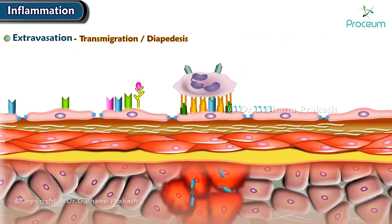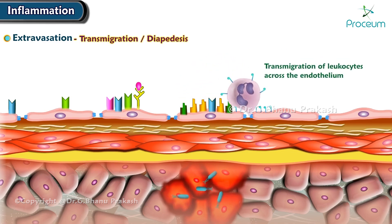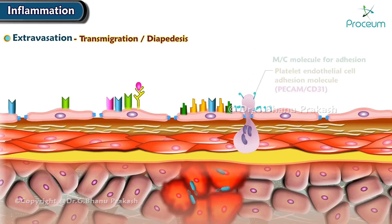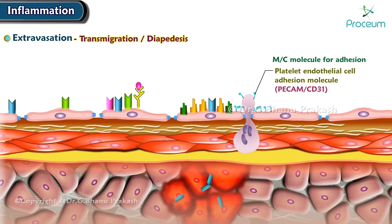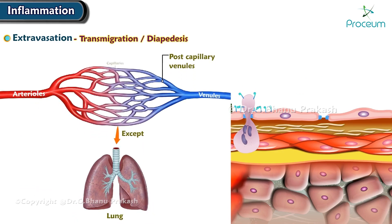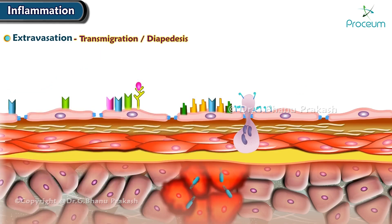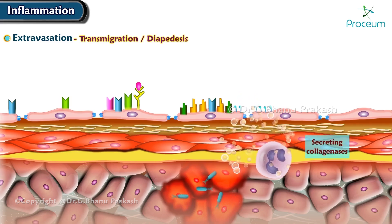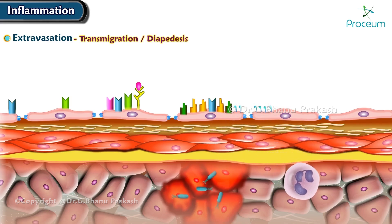Now let's move on to transmigration, or diapedesis. This is characterized by the transmigration of leukocytes across the endothelium. The most common molecule for adhesion is the platelet endothelial cell adhesion molecule, also known as PECAM or CD31, present on both endothelium and leukocytes. Diapedesis occurs in post-capillary venules, except in the lungs, where it also occurs in the capillaries. After traversing the endothelium, leukocytes pierce the basement membrane, probably by secreting collagenases, and enter the extravascular tissue. Typically, the vessel wall is not injured during leukocyte transmigration.